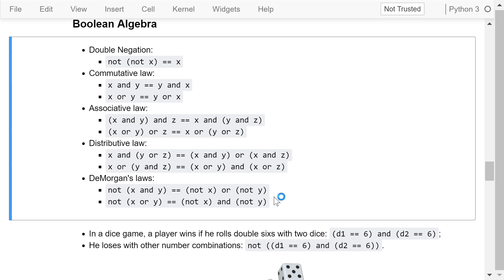The last one is De Morgan's law. It specifies how NOT can be distributed in these two cases. I list these laws here so you can use this table as reference.